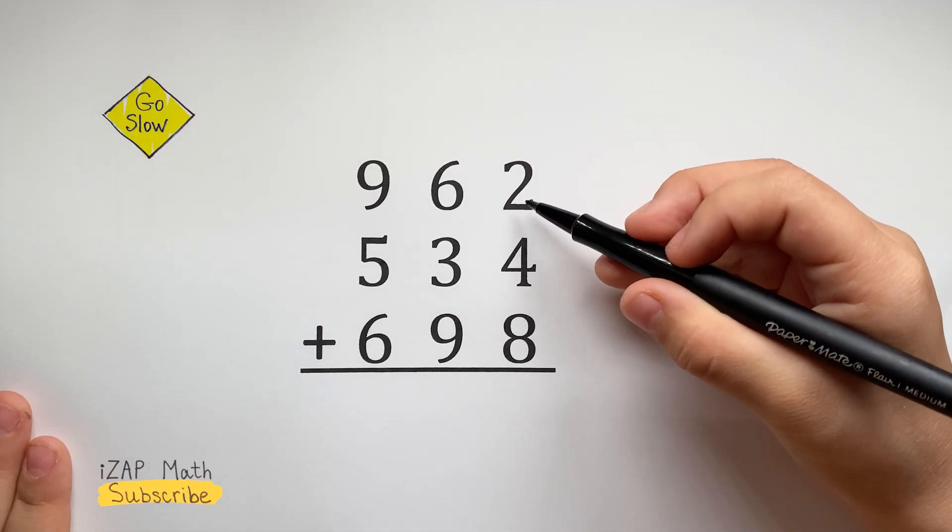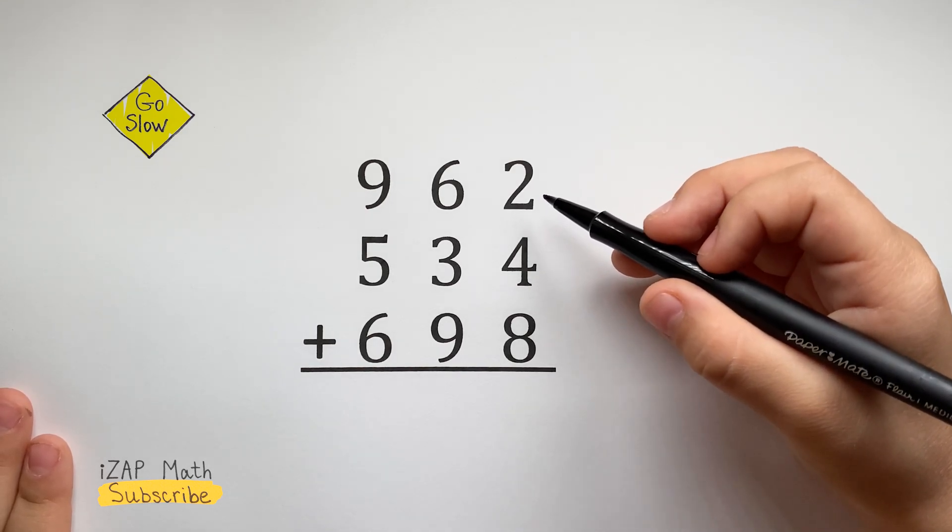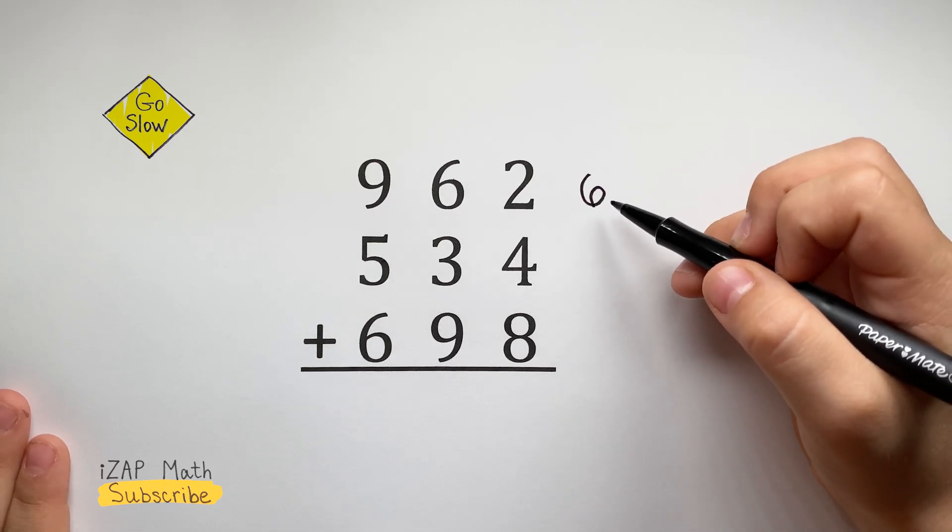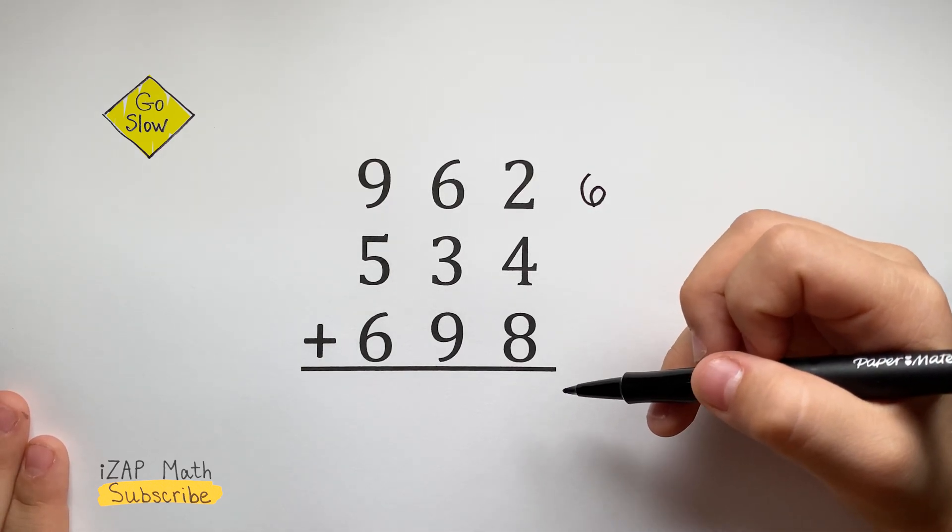Let's look at 2 and 4 in the ones column. 2 plus 4 equals 6. 6 plus 8 equals 14.